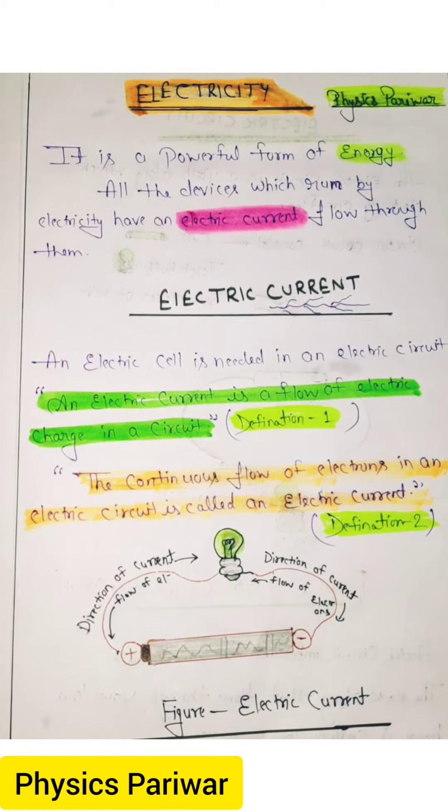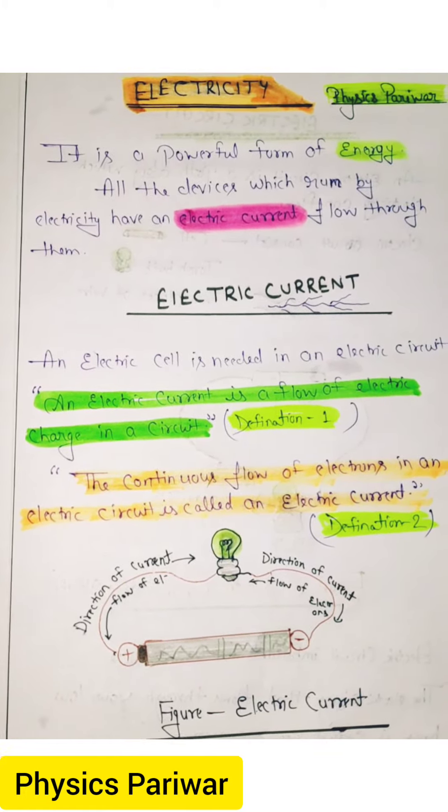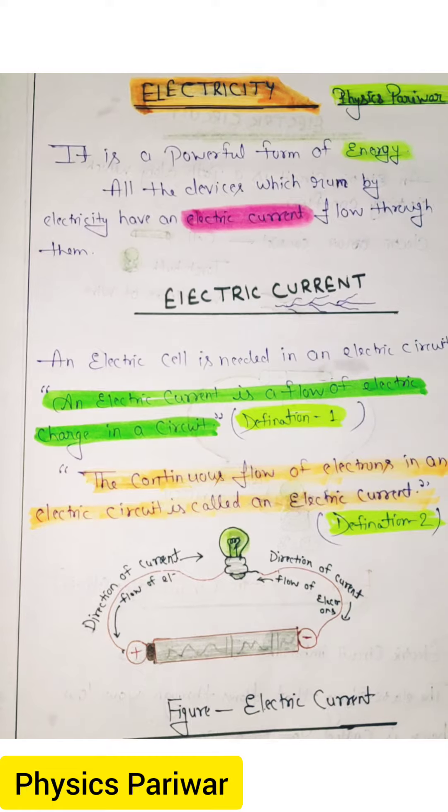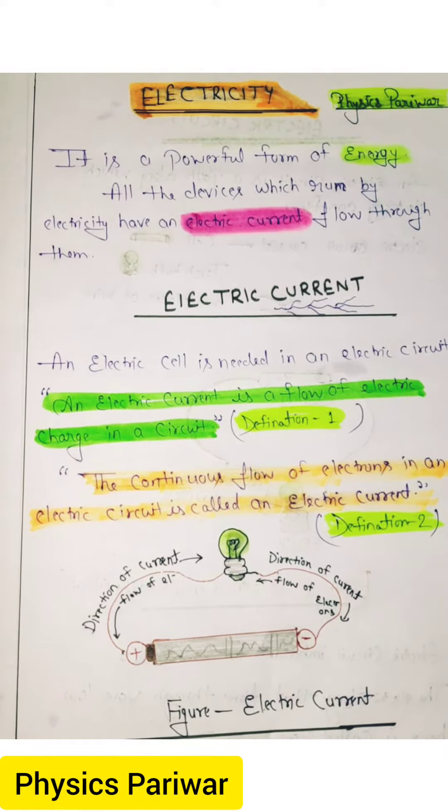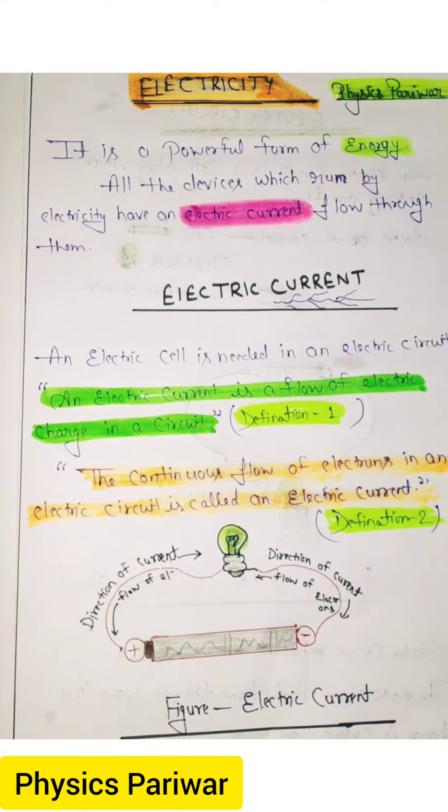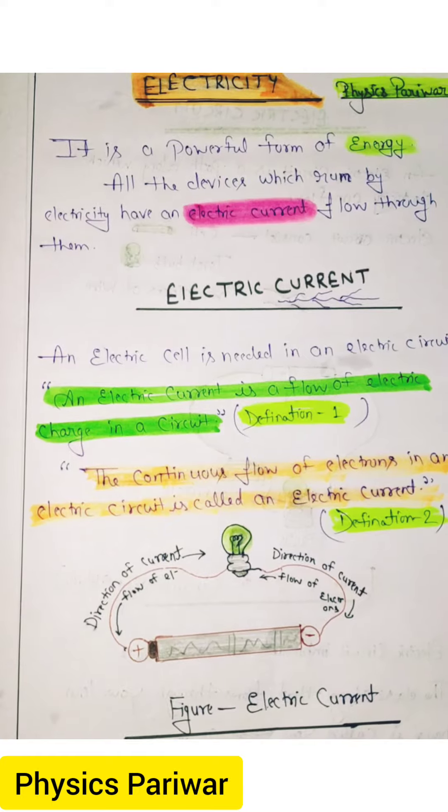Here is the figure of electric current. Now you can see that here one cell, they have two poles, positive and negative. And you can see that the direction of current and opposite flow of electron.